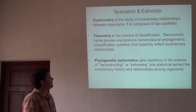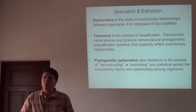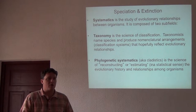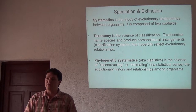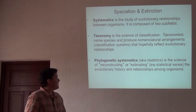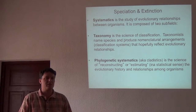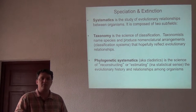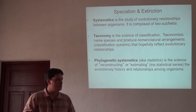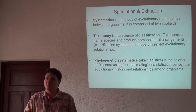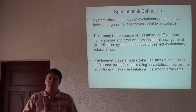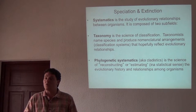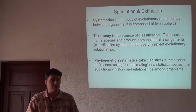Systematics is the general study of evolutionary relationships of organisms, composed of a couple of subfields. Taxonomy is the science of classification — hierarchically organizing diversity, recognizing new species, naming taxa. And phylogenetic systematics, sometimes used interchangeably with cladistics, is the process of reconstructing or estimating the genealogical and evolutionary relationships among groups. That latter part depends heavily on the use of evolutionary or phylogenetic trees, which we want to use as the framework for developing classification systems.